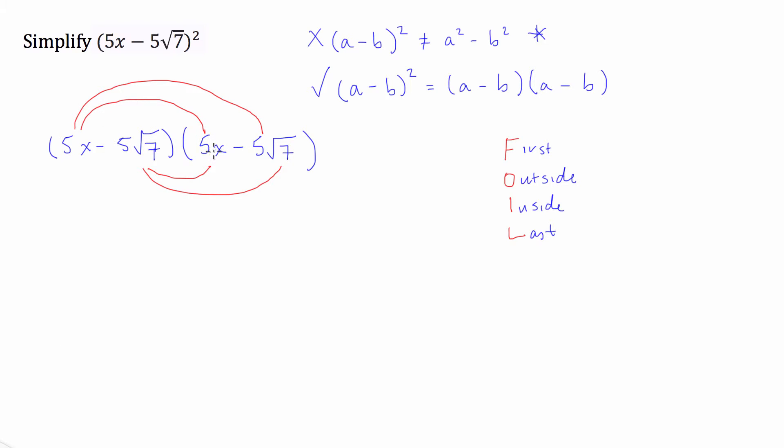So 5x times 5x, the first, is 25x squared. We have negative 5 root 7 times 5x, which is going to be negative 25 square root 7x.